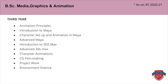The third year is all about 3D animation, starting with Animation Principles. Introduction to Maya follows — Maya is one of the most important software for 3D animation, used by most industries in India and abroad for producing CG content. Character Setup and Animation in Maya, Advanced Maya, Introduction to 3D Max, Advanced 3D Max, Character Animation, CG Filmmaking, Project Work, and Environment Science complete the essential subjects of BAC Media, Graphics and Animation.